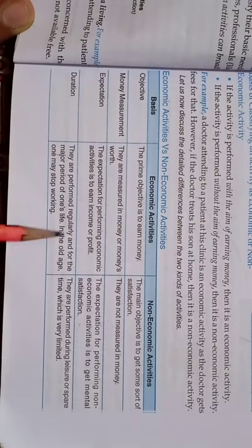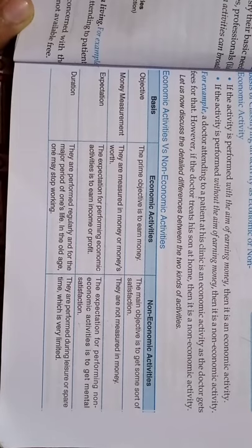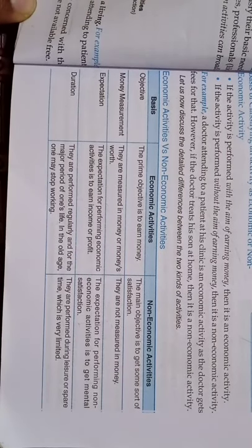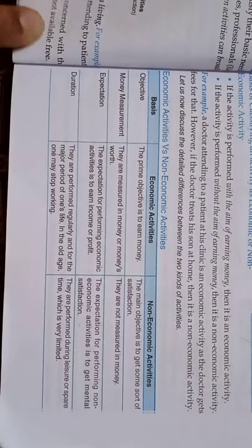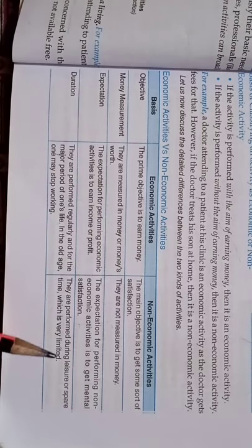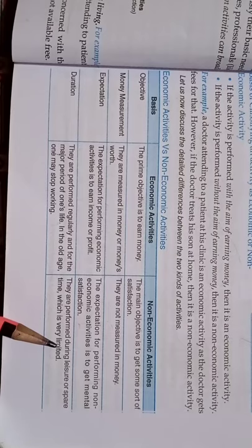Fourth difference is duration. Economic activities are performed on a regular basis for a longer period of time — for our livelihood we perform them throughout our working life, roughly from age 18-20 up to age 60 or beyond. Non-economic activities, on the other hand, are done occasionally and are limited — for example, doing charity on Diwali or on a birthday. So economic activities are regular dealings, while non-economic activities are done on an irregular basis.